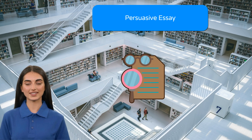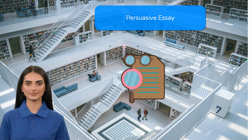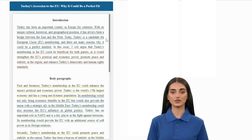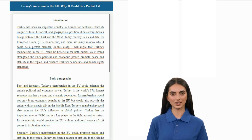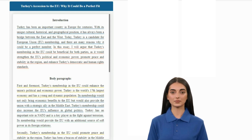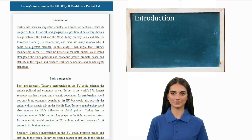We will dive into the key steps, but first let's check out a five-paragraph example. Our topic for this example is Turkey's accession to the EU — why it could be a perfect fit. This is a great topic idea as it presents a strong argument and can be backed up with convincing points.